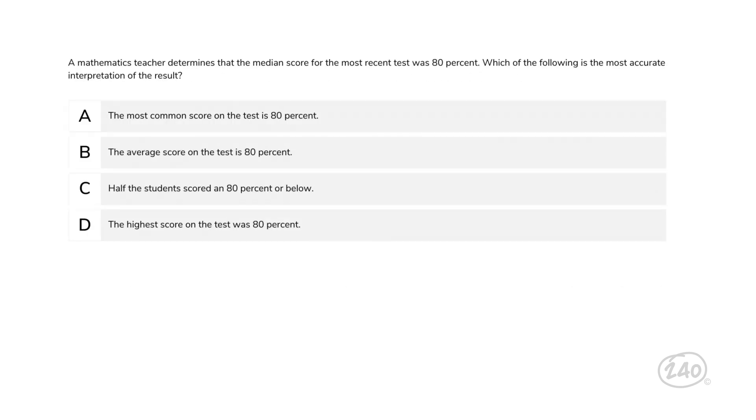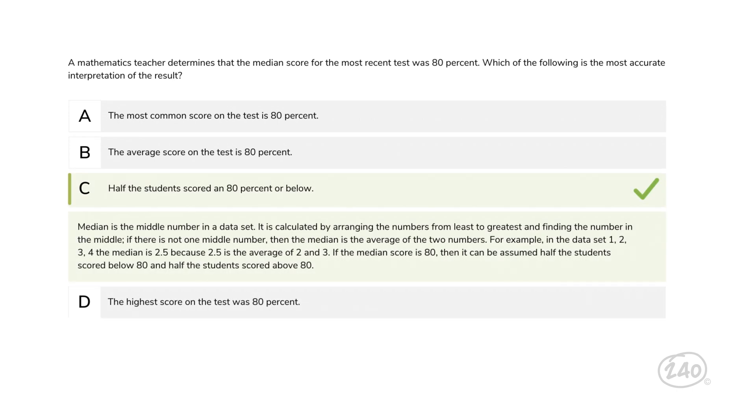Okay, on to question number three. A mathematics teacher determines that the median score for the most recent test was 80 percent. Which of the following is the most accurate interpretation of the result? This question gets into the definitions of mean, median, and mode. Remember those? Great. Then you already know that the answer is C again. Median is the middle number in a data set.